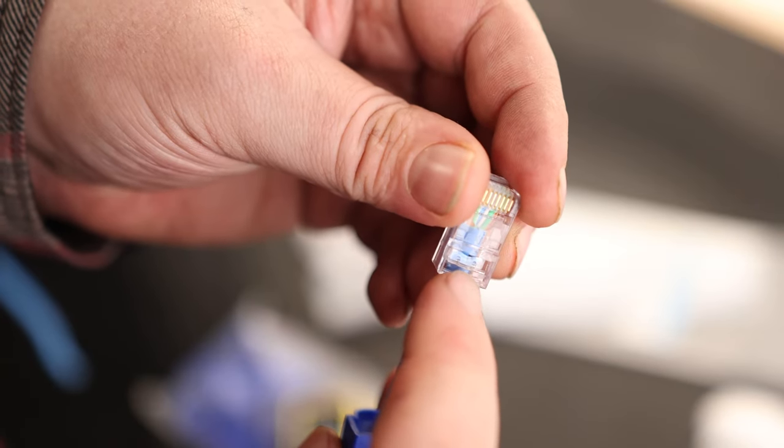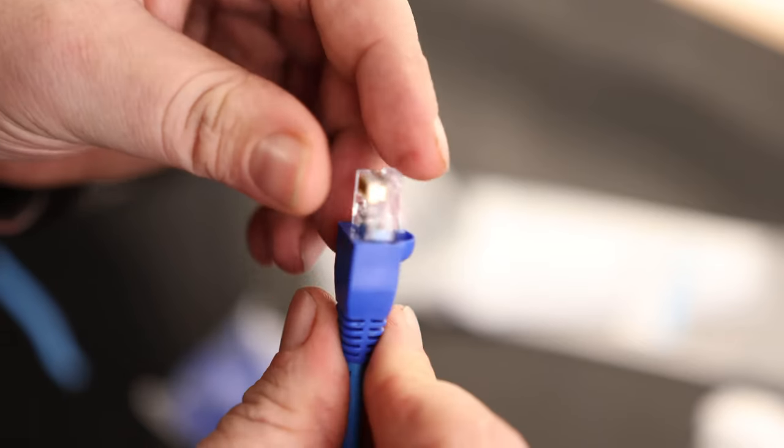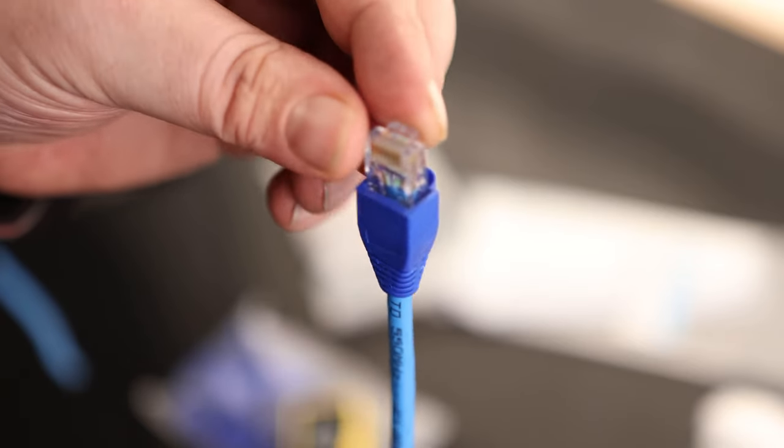So we can see we are properly crimped here. So that's not going anywhere. Now I can put our strain relief on. So this side is done. Now we're just going to do the other side. And then we can test it.